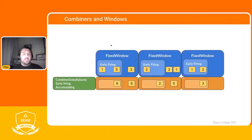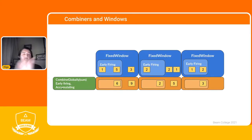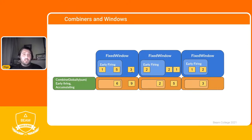With triggers the same applies — we perform the combine within each trigger firing. With accumulating mode, new elements are added to the early firing result. For example, one window has an early firing of one, six, and five giving six; a new element adds three giving nine. The same applies across other windows.